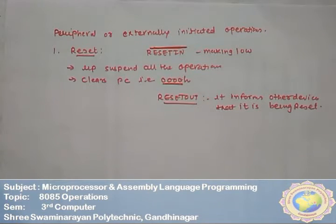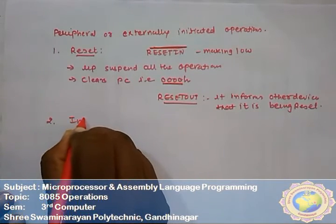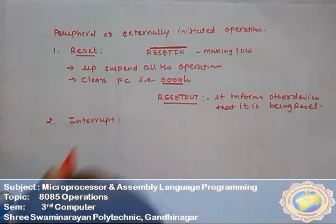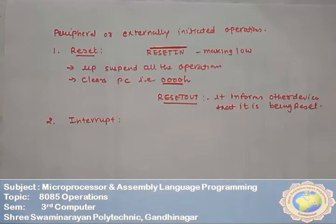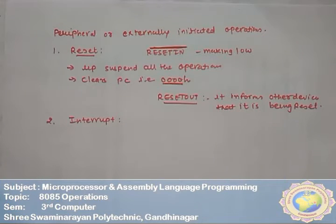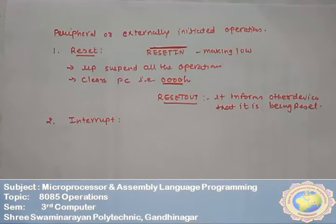The second externally initiated operation is the interrupt, which you already know. The external device can interrupt the 8085 by sending a signal on one of the interrupt pins. The interrupt types we have are: TRAP, RST 7.5, RST 6.5, RST 5.5, and INTR — to execute a group of instructions called the interrupt service routine (ISR).